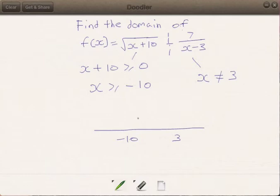For x to be greater than or equal to negative 10, that will be the line that goes across from negative 10. But if you realize, we are supposed to exclude 3.